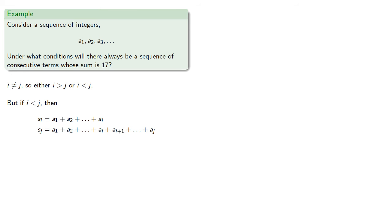And since all the terms of the sequence are greater than 0, si would end up being less than sj, and consequently it could be less than sj plus 17, and they can't be equal. So i must be greater than j.